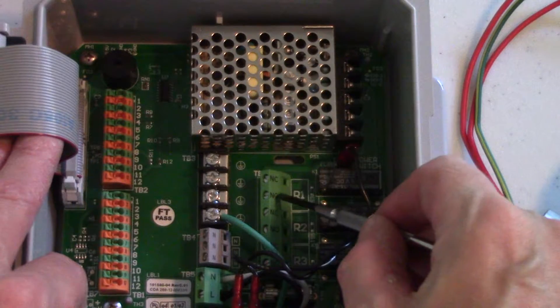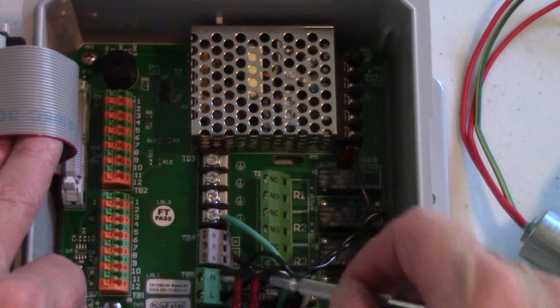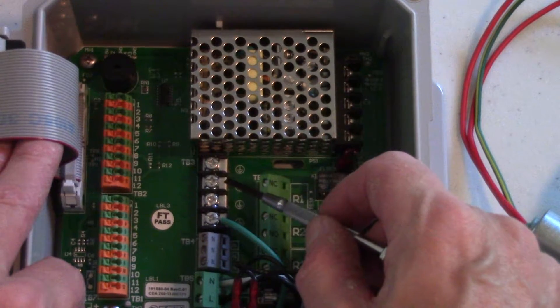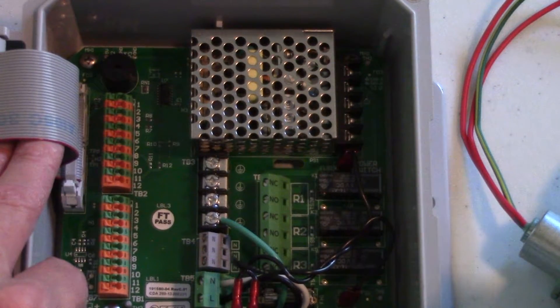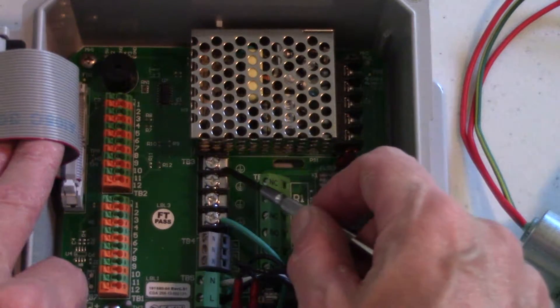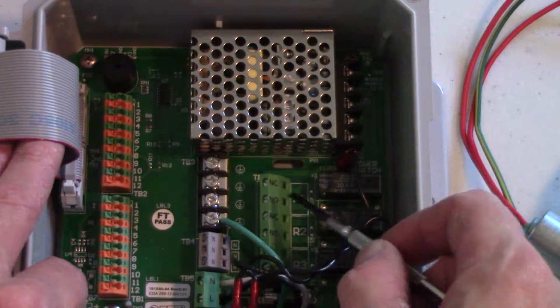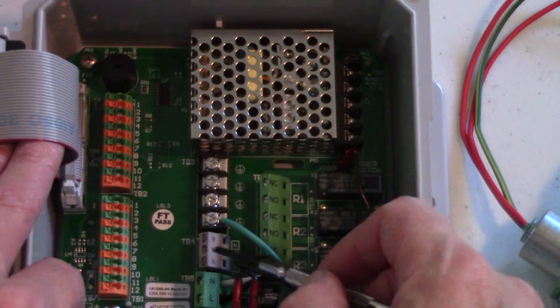Here is R1 and the normally open. Here is TB4 and here is TB3 for the ground. Now remember the solenoid valve has three wires. The ground we're going to wire up here and the other two wires to normally open on R1 and the other one on TB4.